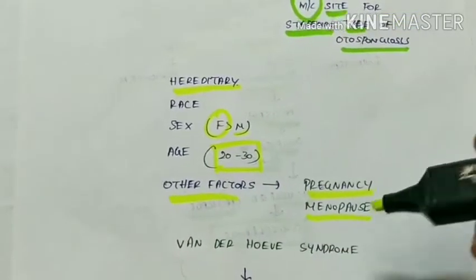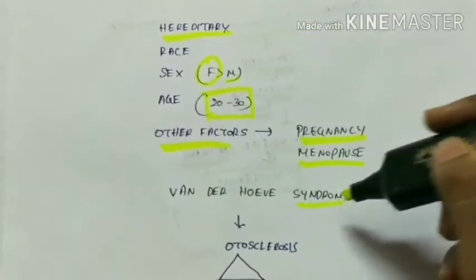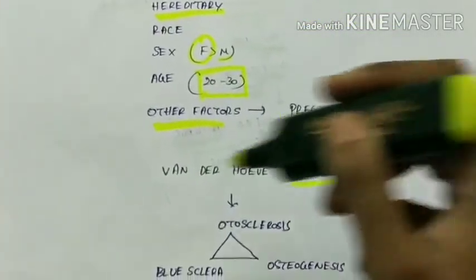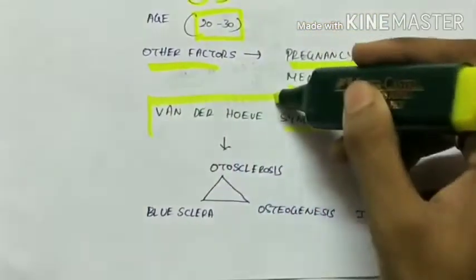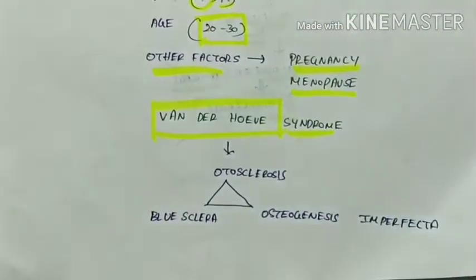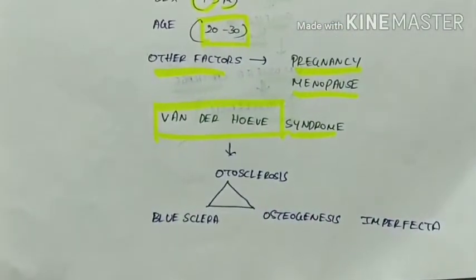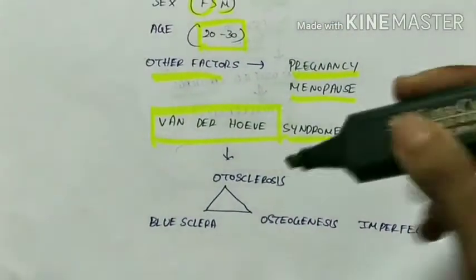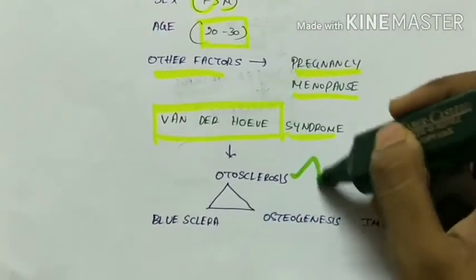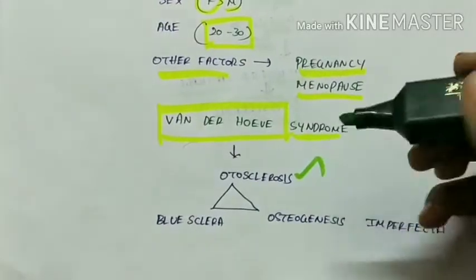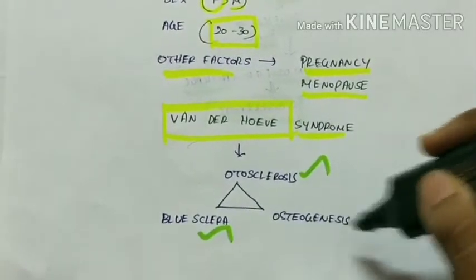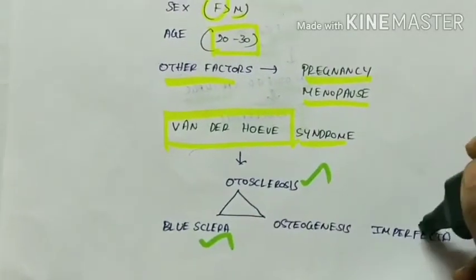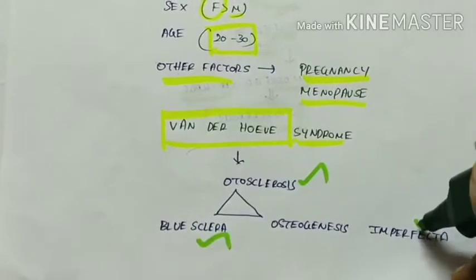There is a syndrome associated with otosclerosis called Van der Hoeve syndrome. It consists of a triad which includes otosclerosis, bluish sclera, and osteogenesis imperfecta, which is an orthopedic disorder.